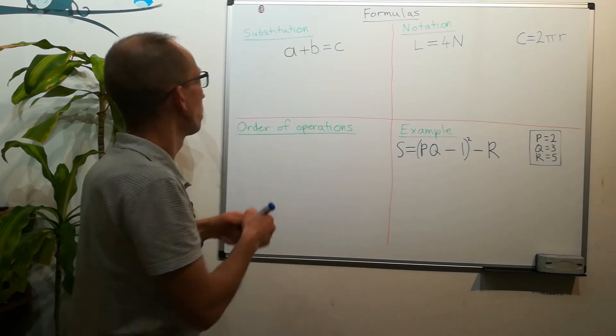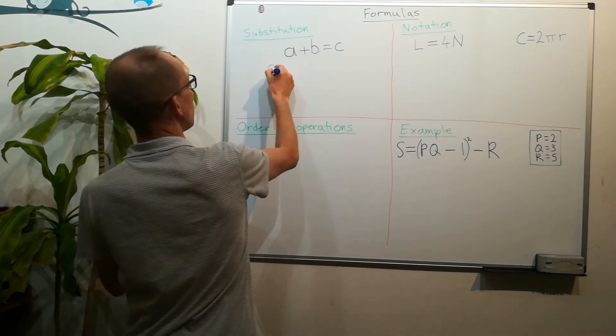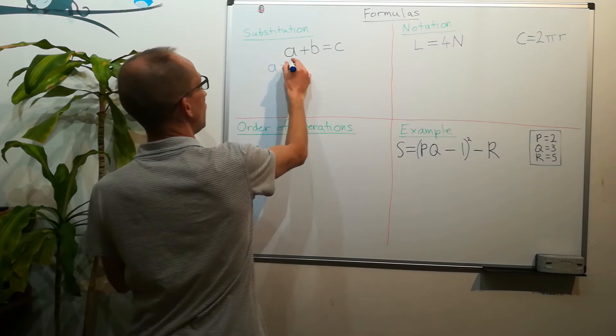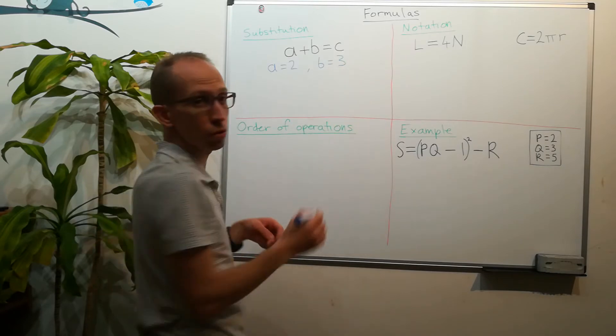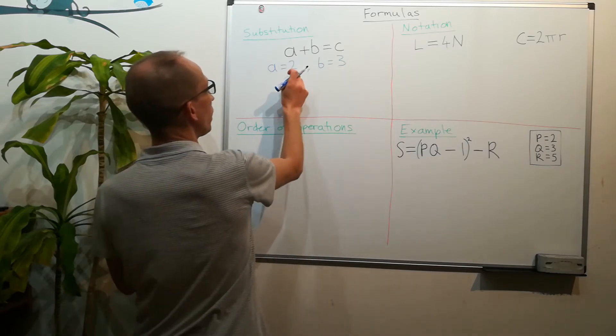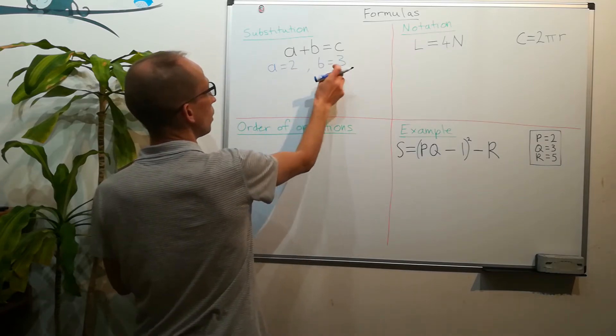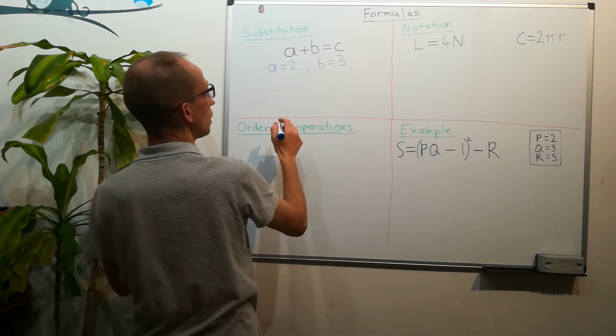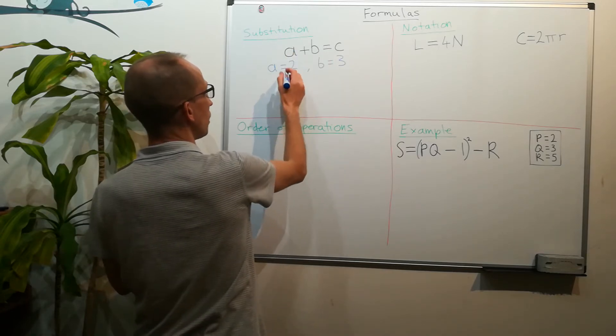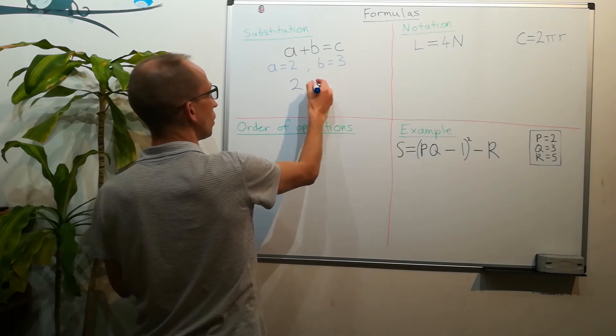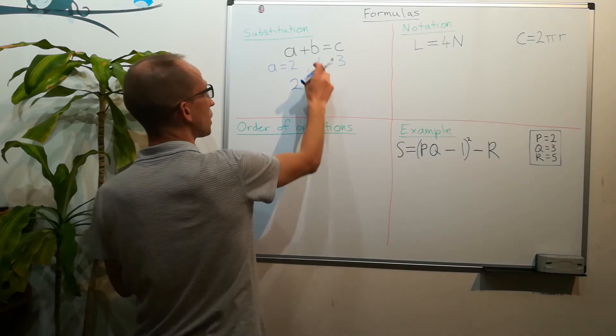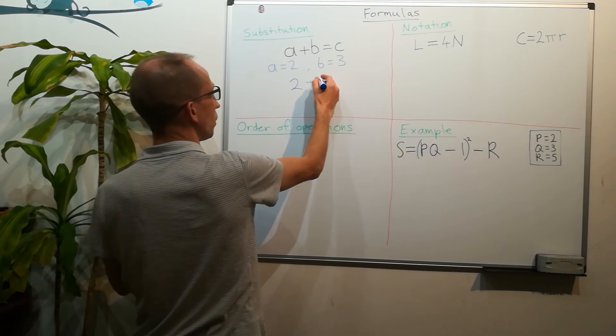So instead of a we're going to have 2 plus, and instead of b we're going to have 3. So if we solve that, 2 plus 3 equals 5.